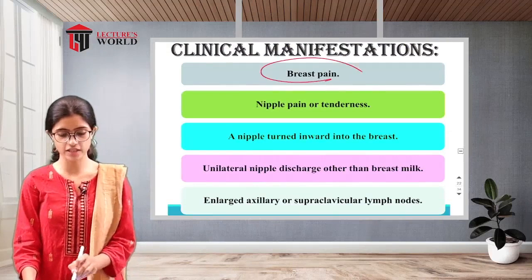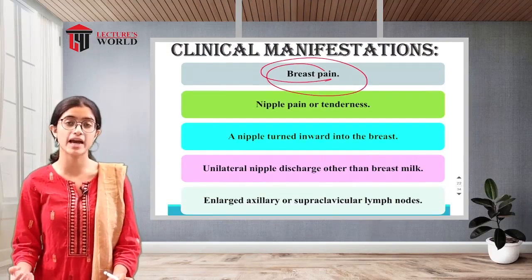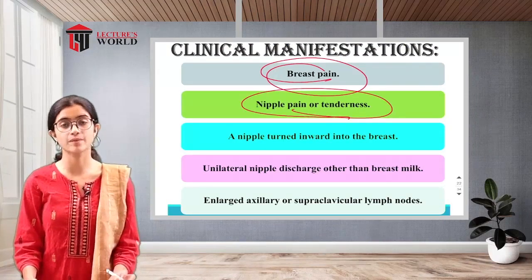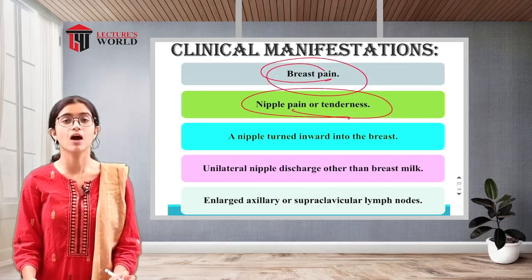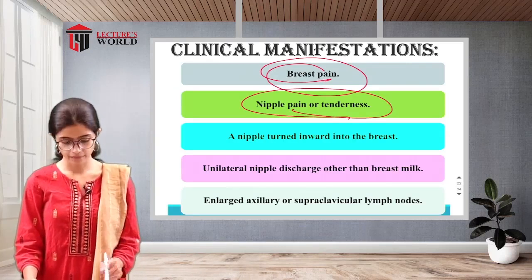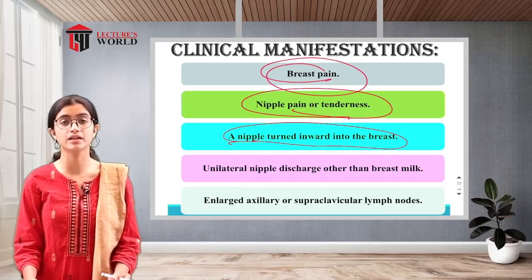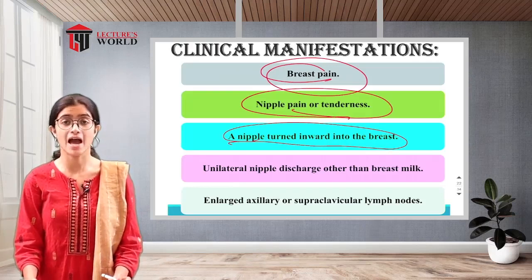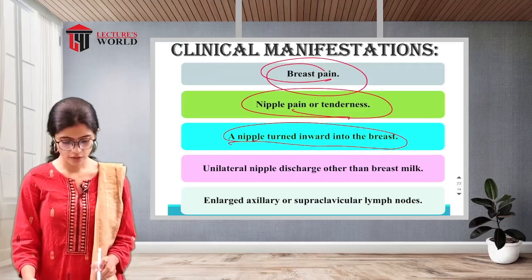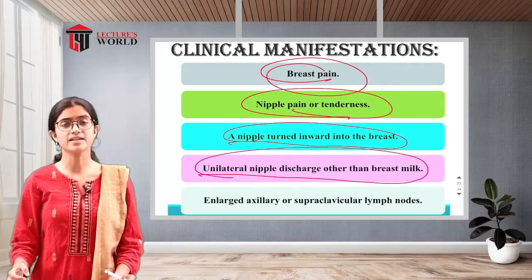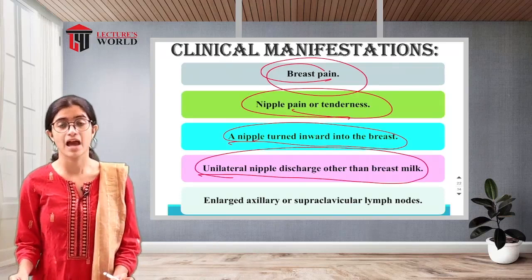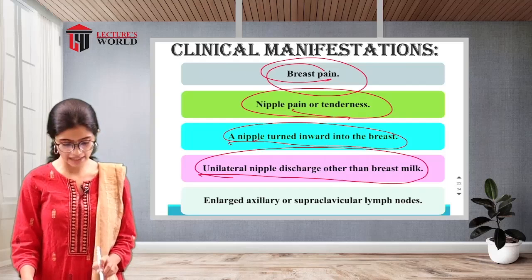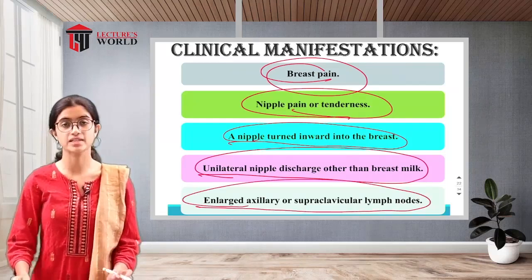Other clinical manifestations include breast pain, nipple pain or tenderness, a nipple turned inward into the breast, and unilateral nipple discharge other than breast milk. When there is an abnormal discharge from the nipple that is not breast milk, it is one of the clinical manifestations. Axillary or supraclavicular lymph node involvement may also be seen.